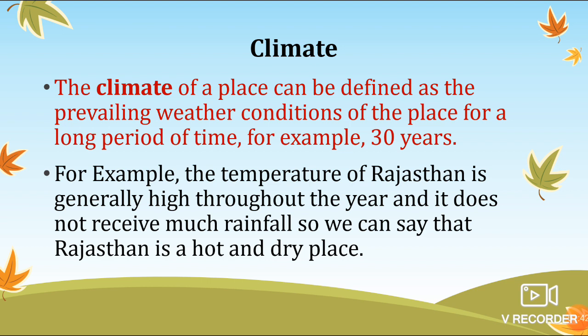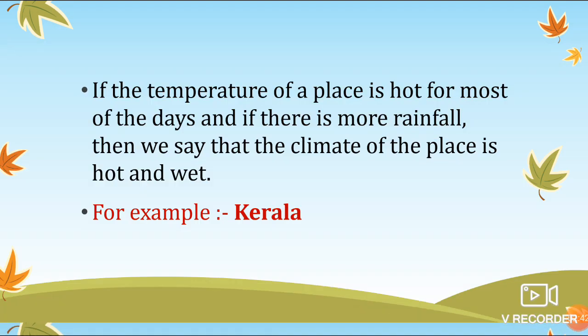We have to focus on this long period of time because, in weather, there is frequent change — sometimes it is cloudy, sometimes rainy, sometimes very hot, sometimes cool. But in climate, conditions prevail for a longer duration. For example, in Rajasthan, you know that it is very hot and rainfall is very less. So Rajasthan can be considered a hot and dry place, because the climatic condition there remains hot for a longer duration and rainfall is very low.